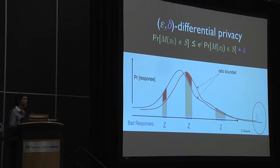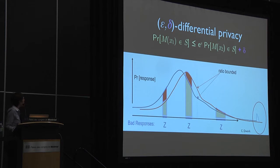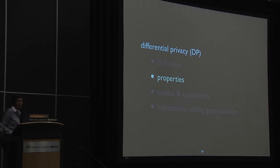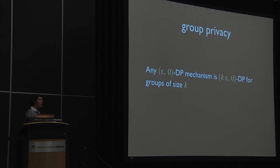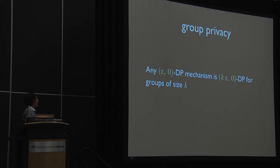Now we have the definition. Let's talk about why we like it so much. The first property: so far I've talked about neighboring databases as differing in one person's information. But differential privacy immediately and elegantly extends to differences in k entries. Anything that's epsilon-zero differentially private is k-epsilon-zero differentially private for groups of size k. So if someone's data appears in more than one row, or she's concerned about her family's privacy, small groups are just fine — you immediately get a guarantee.